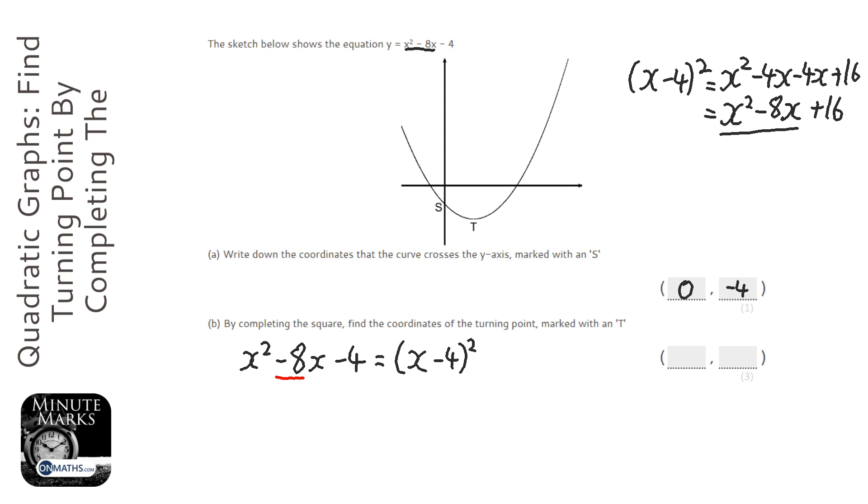Now we want the x squared minus 8x, because that's what the equation in the question is, but we don't want this bit, that plus 16. So we're going to subtract, get rid of the 16 by taking away 16 there. And we've also got the minus 4 which is in the question to have as well.